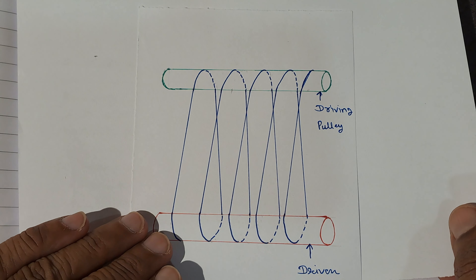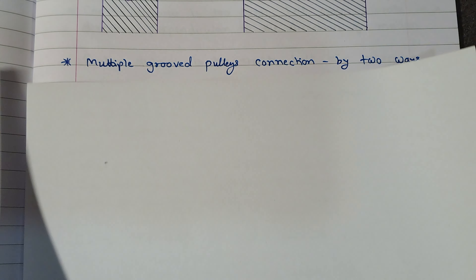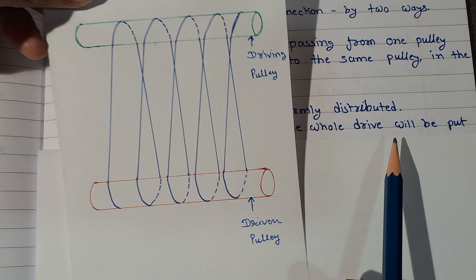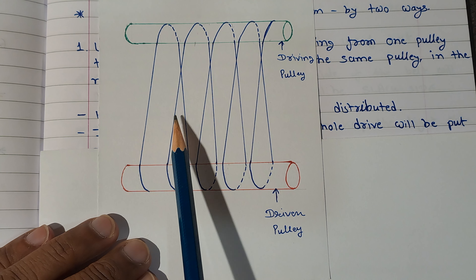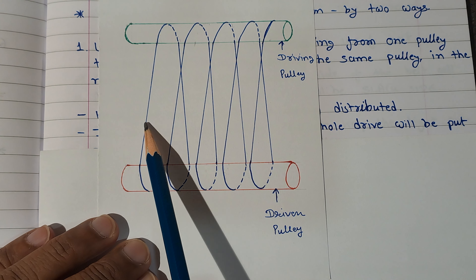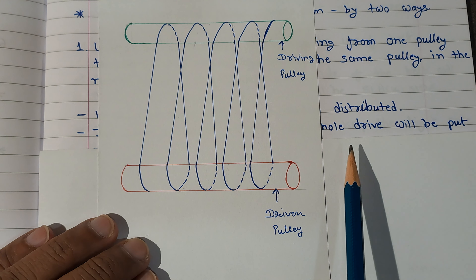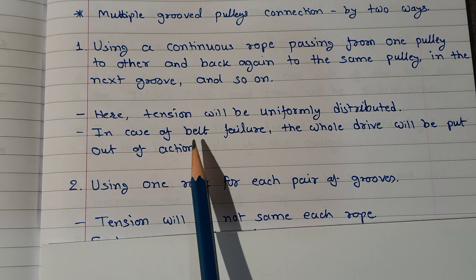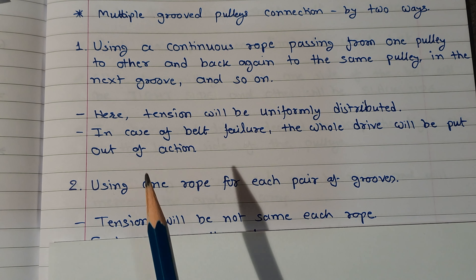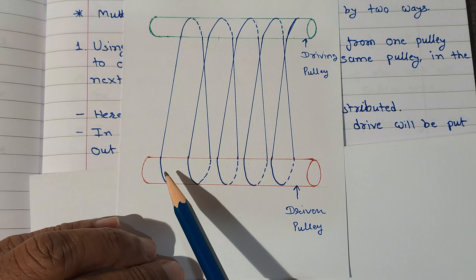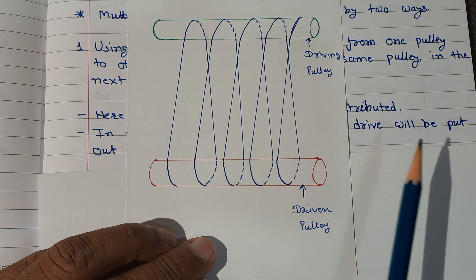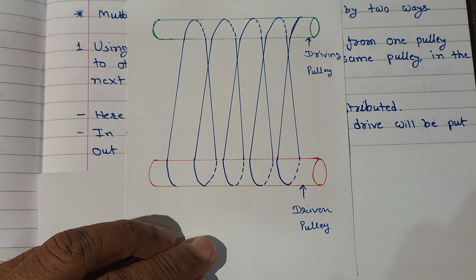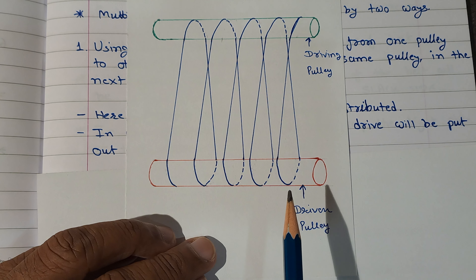With this arrangement, the tension will be uniformly distributed — since it is a single rope, all rope branches have uniformly distributed tension. However, the drawback is that in case of rope failure, the whole drive will be put out of action and we have to go for immediate replacement of the rope.